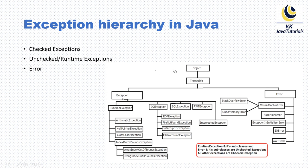The three topmost classes in the exception hierarchy are Throwable, Exception, and Error. java.lang.Throwable belongs to the java.lang package. Throwable is the root class for Exception and its subtypes, and Error and its subtypes. In other words, it is the superclass for both Exception and Error. java.lang.Throwable extends java.lang.Object and defines two subclasses: Exception and Error.